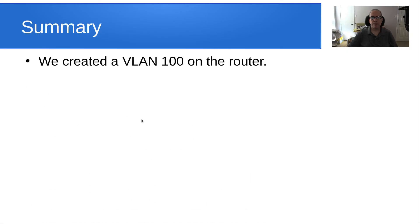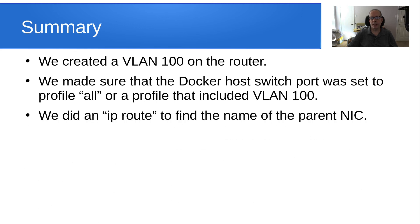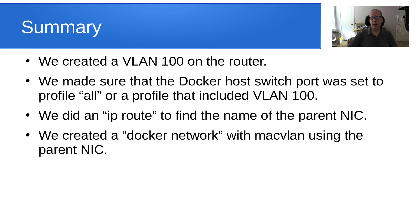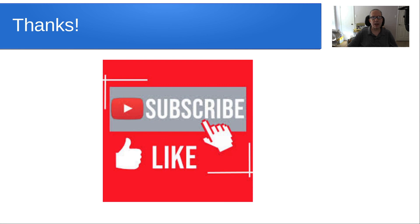In summary: we created VLAN 100 on the router, ensured the Docker host switch port profile was set to 'all' or included VLAN 100, ran 'ip route' to find the parent NIC name, created a Docker MacVLAN network using that NIC, and created a Docker container with 'docker run' using the new network to address the container on VLAN 100. Thanks for watching — please subscribe and like the channel, and we'll see you next time.